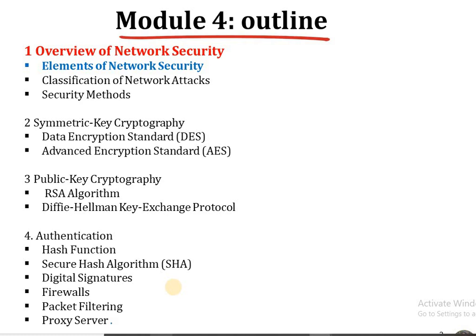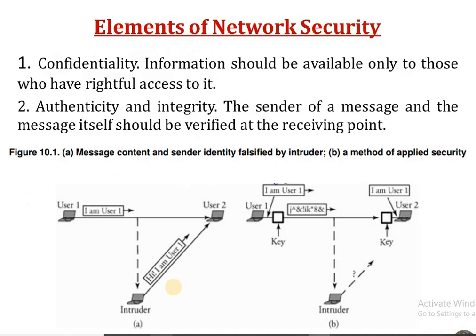Network security is a top priority issue in data networks, which is the current trending topic, and we need to provide security to this largely growing network. Network security is going to combine two main elements: the first one is confidentiality, and the second one is authenticity and integrity.